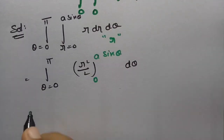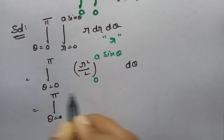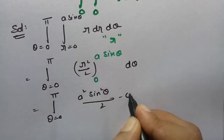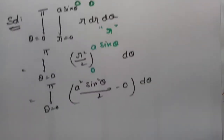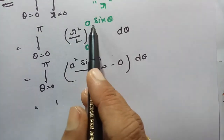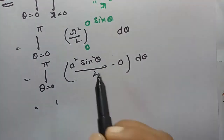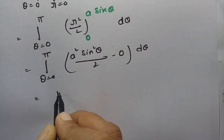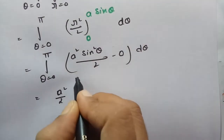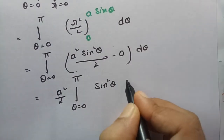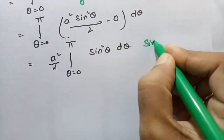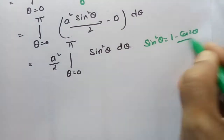If I substitute the upper limit minus lower limit, this will be a squared sin squared theta by 2 minus 0, into d theta. So if I write a sin theta whole square it is nothing but a squared sin squared theta. And if I write a squared by 2 outside, so 0 to pi this is sin squared theta into d theta. As you know that sin squared theta has a formula that is 1 minus cos 2 theta by 2.